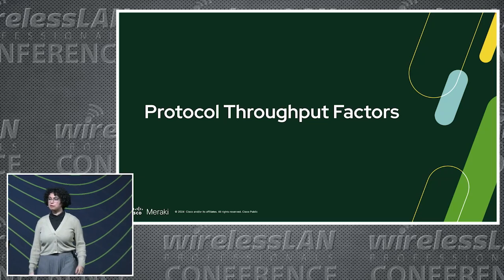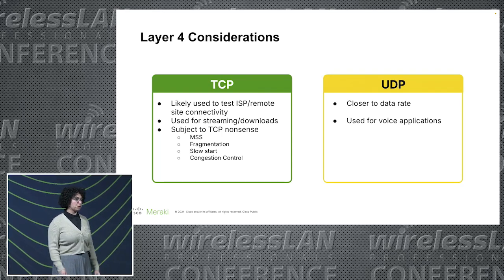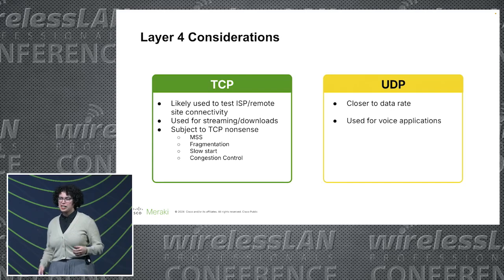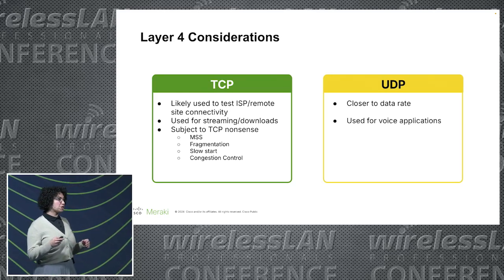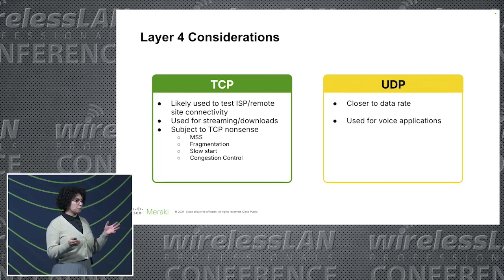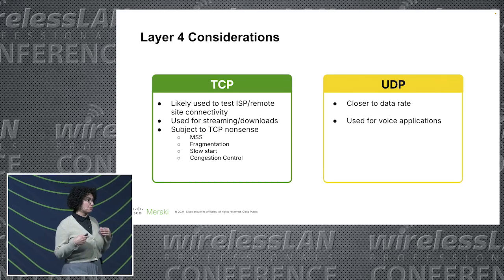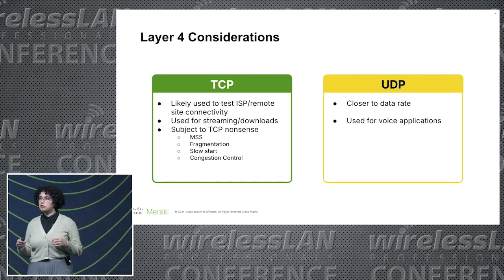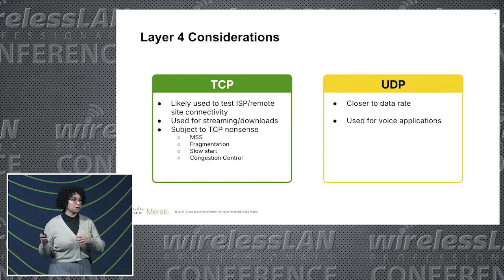Now the protocol aspect — this is the fun part. First, specific to layer four: tools like speedtest.net and iPerf3 default to TCP. If your concern is with an application using large data file transfers or even YouTube, that's a TCP affair. For UDP, speed tests should be closer to the actual data rate because UDP is not subject to TCP congestion avoidance mechanisms, maximum segment size, and other TCP-specific issues. If you're specifically having an issue with Zoom or WebEx, look at UDP throughput testing specifically, as those applications use UDP ports.